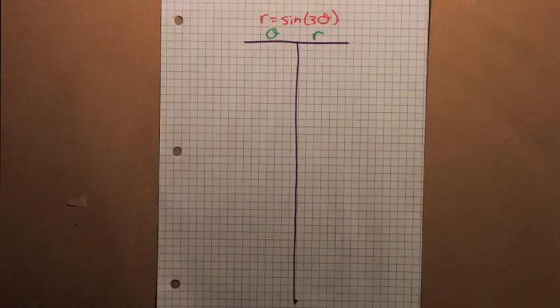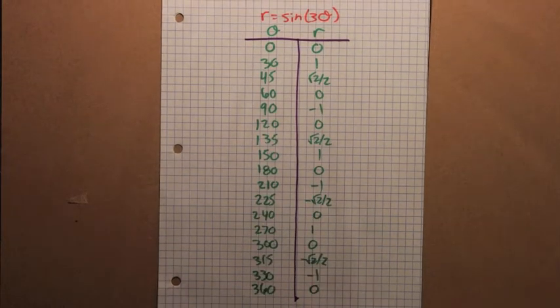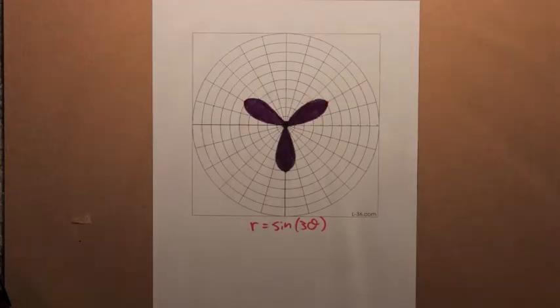So what about r equals sine 3 theta? Maybe since the graph for r equals sine 2 theta had four petals, this one will have six. Or three. That's weird.